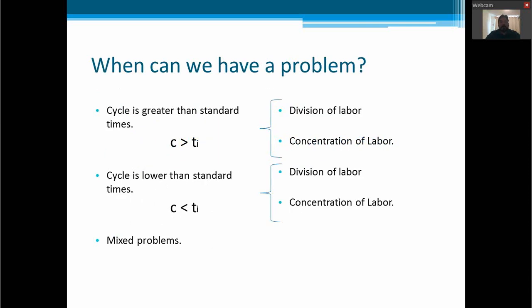When can we have a problem? We can have a problem when the cycle is greater than the standard times, and we can do the line balancing by division of labor or concentration of labor. And if the cycle is lower than the standard times, then we can also have division of labor or concentration of labor. We also have mixed problems where in some tasks the cycle is greater than the task time, and at other times the cycle is lower than the task time.